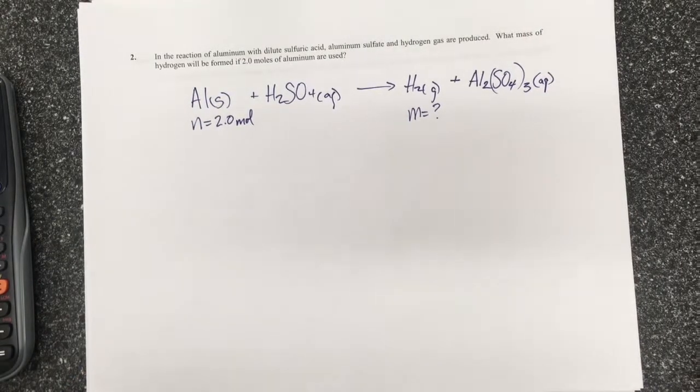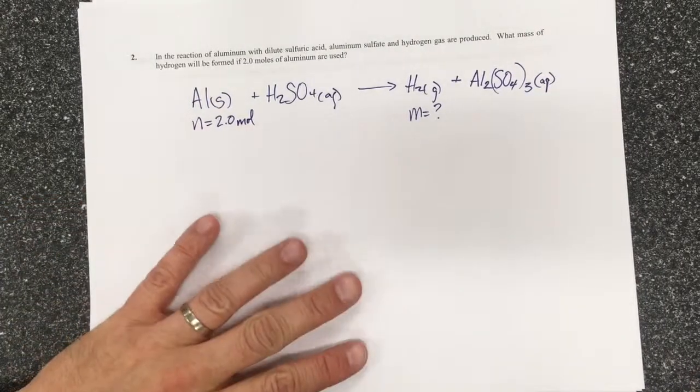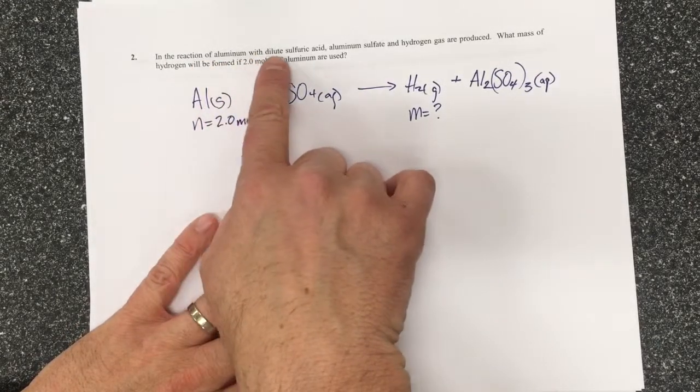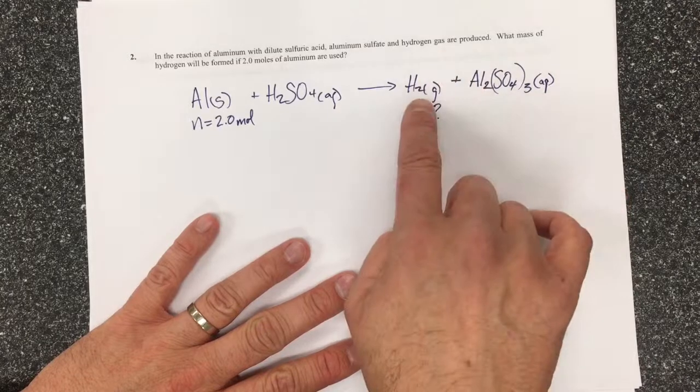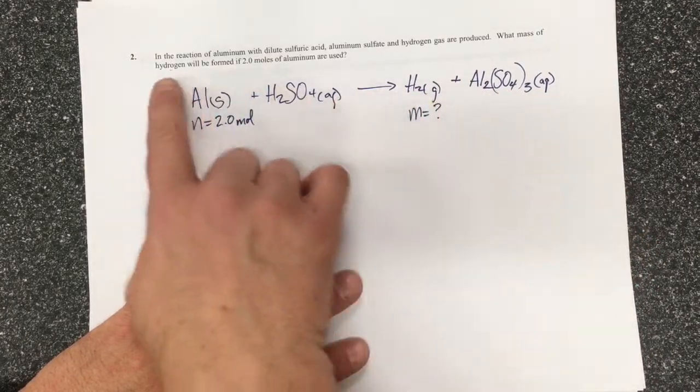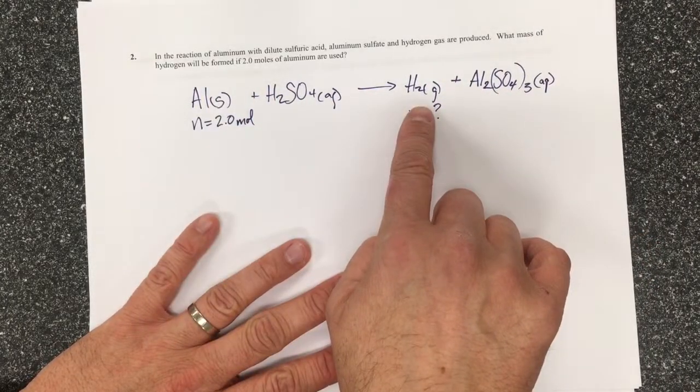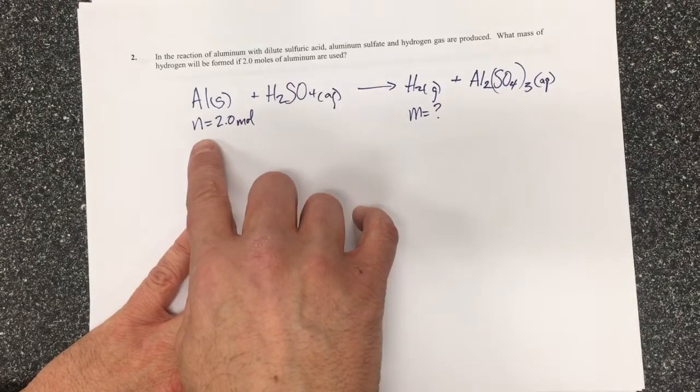This is our second question. In the reaction of aluminum with dilute sulfuric acid, aluminum sulfate and hydrogen gas are produced. What mass of hydrogen will be formed if two moles of aluminum are used?